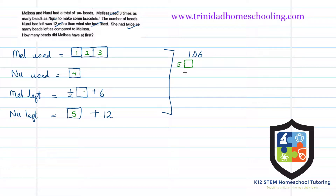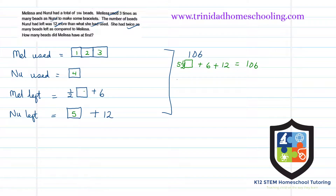Adding up the boxes, we have five and a half shares, plus 6, plus 12 — and all of this equals 106. So our five and a half shares plus 6 plus 12 gives us 18 in fixed amounts.